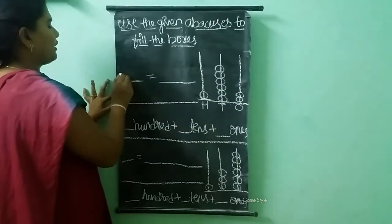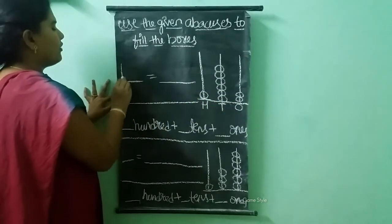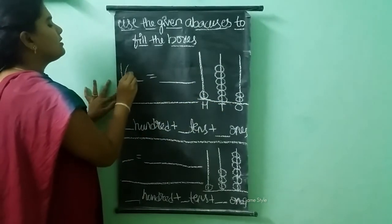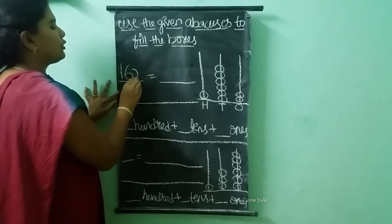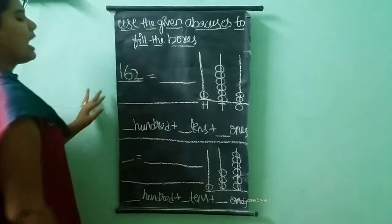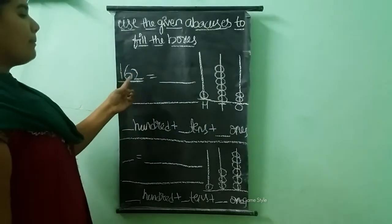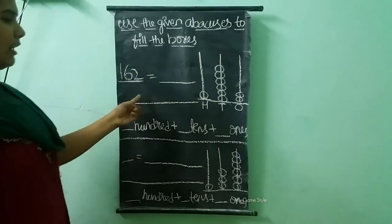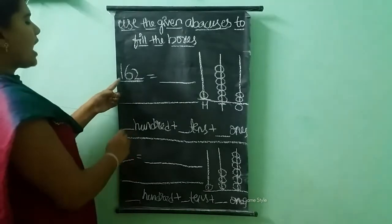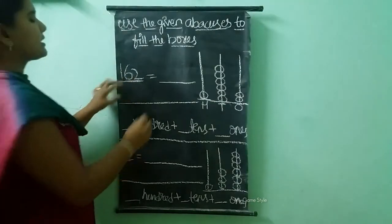So we need to write here: one hundred and sixty-two. And then we need to write the number name here: one hundred and sixty-two.